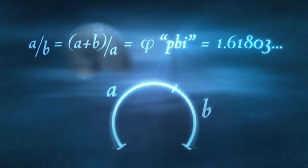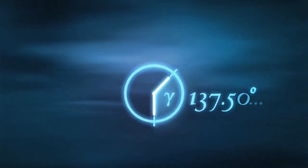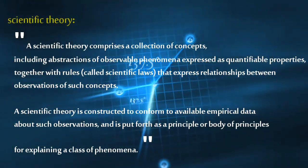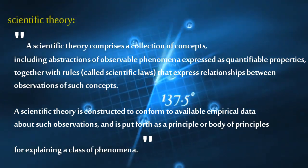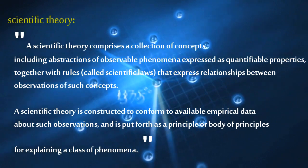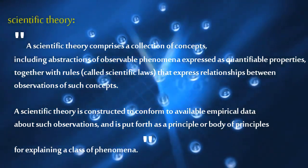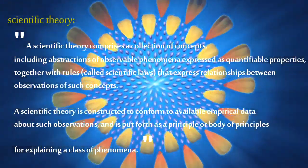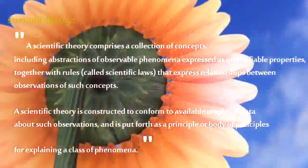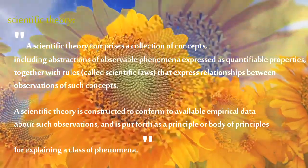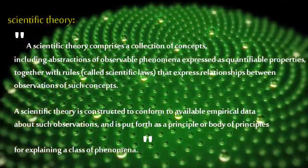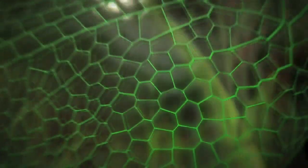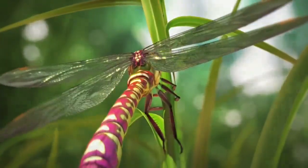You should learn more about science, and the whole concept of science. To understand the whole concept of science, you should know what a scientific theory is. A scientific theory comprises a collection of concepts, including abstractions of observable phenomena, expressed as quantifiable properties, together with rules called scientific laws, that express relationships between observations of such concepts. A scientific theory is constructed to conform to available empirical data about such observations, and is put forth as a principle or body of principles for explaining a class of phenomena.